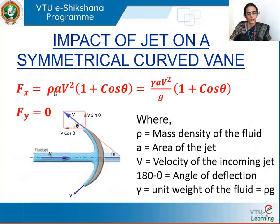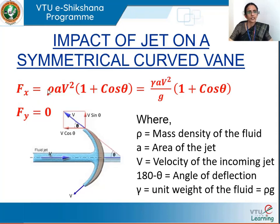To summarize: Fx = ρAv²(1 + cosθ), Fy = 0, where x is the direction of the jet. This can also be written as γAv²/g × (1 + cosθ), where γ is the unit weight of the fluid equal to ρg. Here ρ is mass density, A is cross-sectional area of the jet, v is jet velocity, and θ is the vane angle, with 180 minus θ being the angle of deflection.